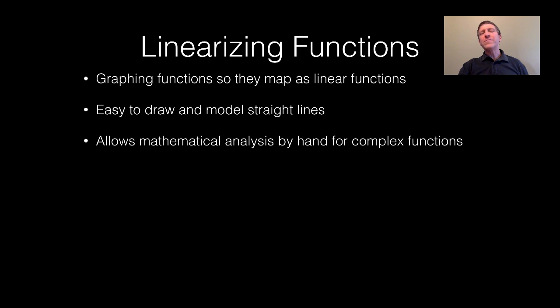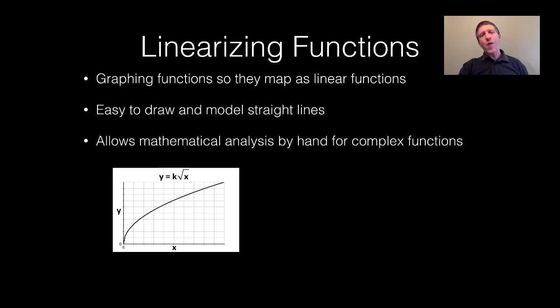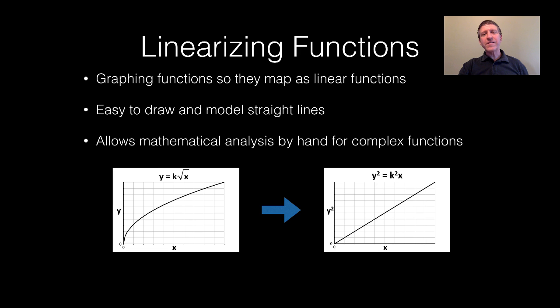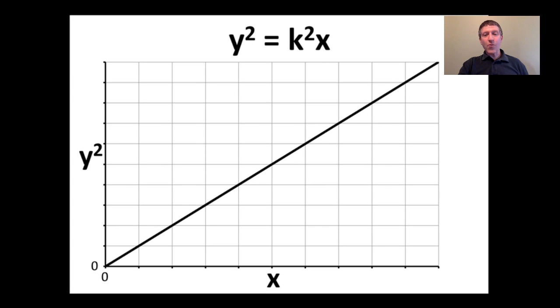And it allows mathematical analysis by hand without a computer for very complex functions. So here's a complex function, y equals k times the square root of x. We can linearize this by instead of graphing y versus x, if we graph y squared versus x. Notice all I've done is I've squared both sides of this relationship. And what I get is y squared equals k squared times x. So this means that if I graph y squared versus x, I get a straight line with the slope being k squared.